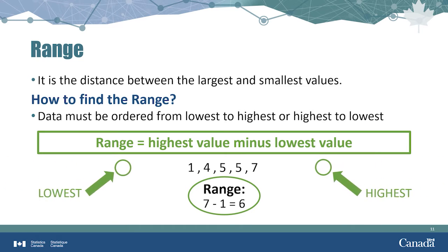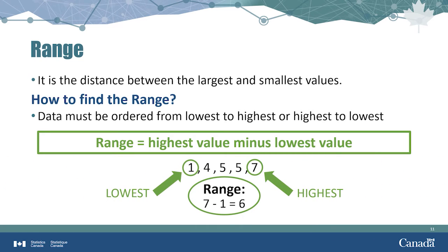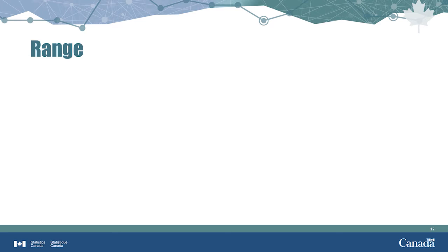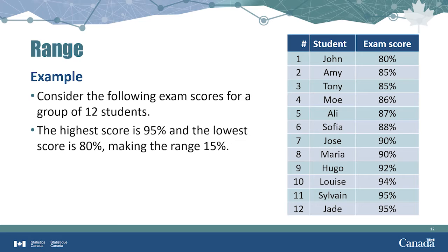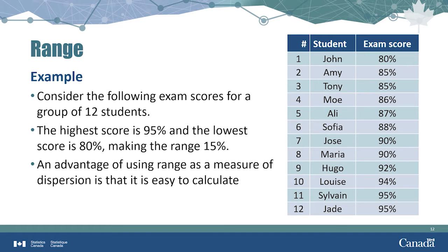In this example, the lowest value is 1 and the highest value is 7, so the range is 7 minus 1, which is 6. Here the range is an appropriate measure because the data points are clustered together. Looking at exam scores from a group of 12 students, the highest score is 95% and the lowest is 80%, making the range 15% — quite narrow. An advantage of using the range as a measure of dispersion is that it is easy to calculate.